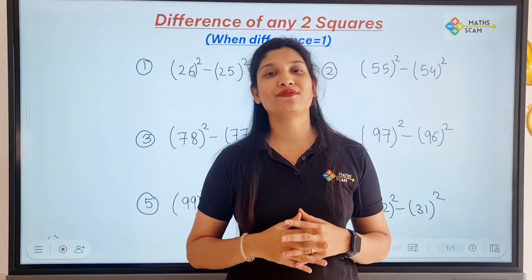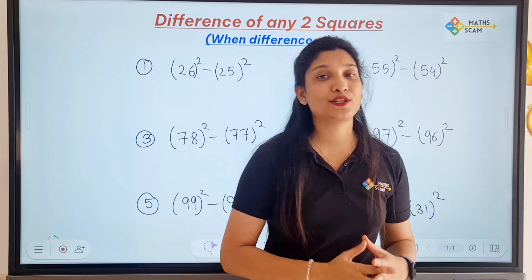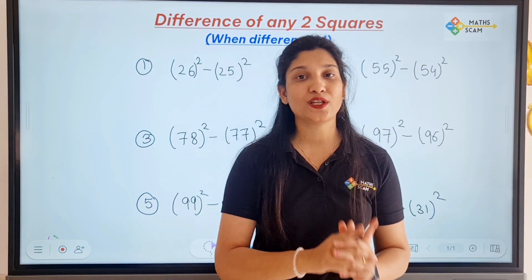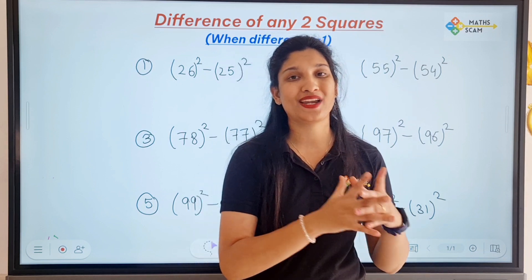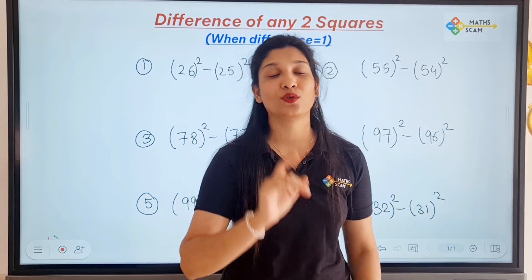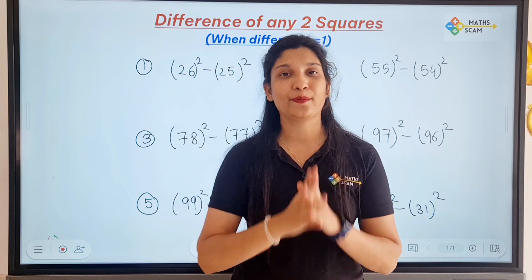Namaste everyone, welcome to our 51 tricks of math course. Today's trick is the difference of any two square numbers, but the condition is the difference between both numbers should be equal to 1. Like suppose 26² minus 25², the difference between 26 and 25 should be equal to 1. So let's start with some questions, we will get a better idea.